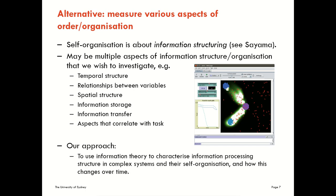Our approach is really to use information theory to characterise information processing structure in complex systems and their self-organisation, and how this changes over time — using measures of various aspects of order or organisation, not simply one single measure for order and organisation at the system level as a whole.